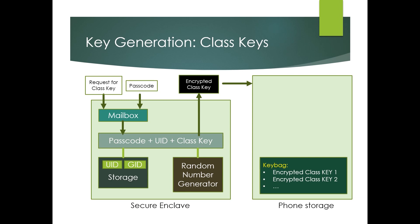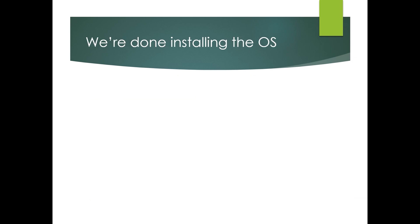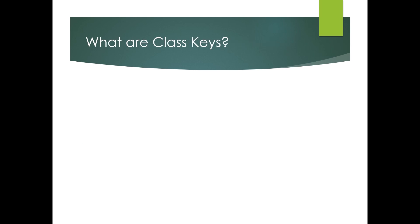The same thing happens with the file system key — the UID is used to encrypt it, and then it's saved in the effaceable storage. These keys are created when you install the operating system. So now we're ready to do day-to-day operations with the phone. For everyday use encrypting individual files, we use the file system key and the class keys — both are encrypted and stored on the phone, but available. Before we encrypt files, let's look at what class keys are.